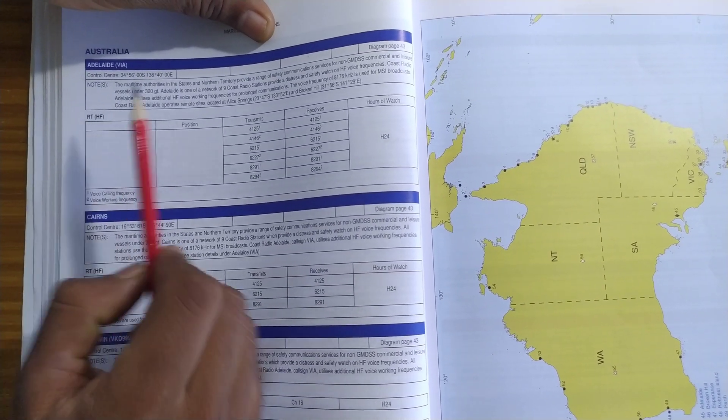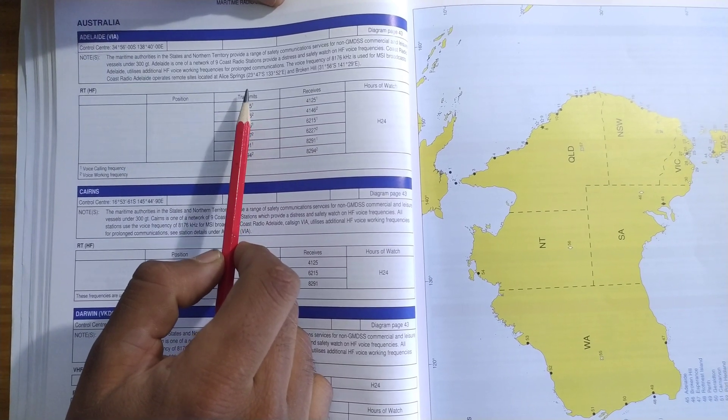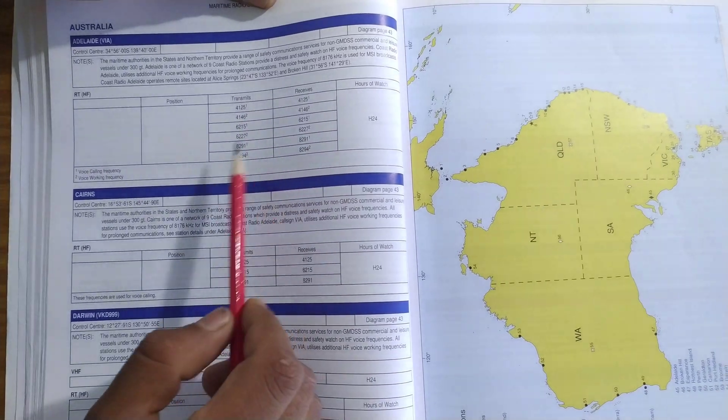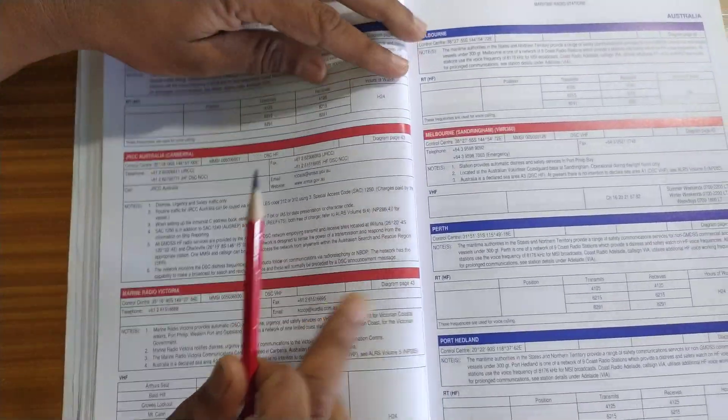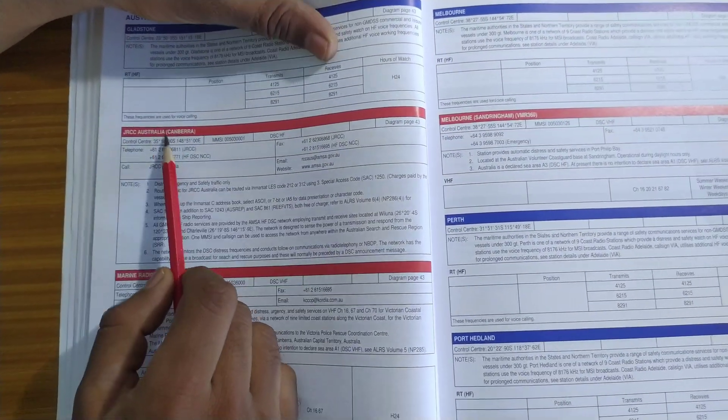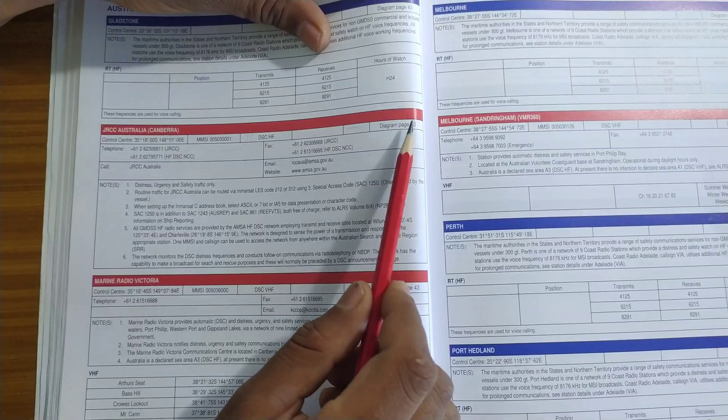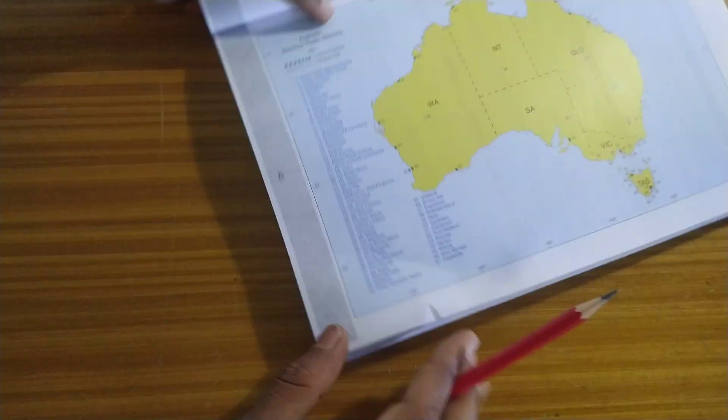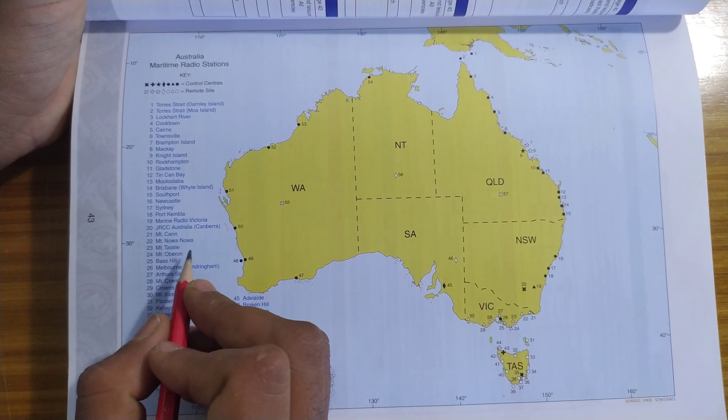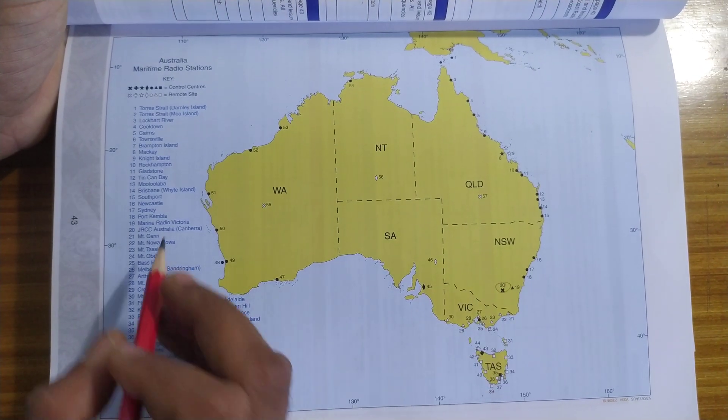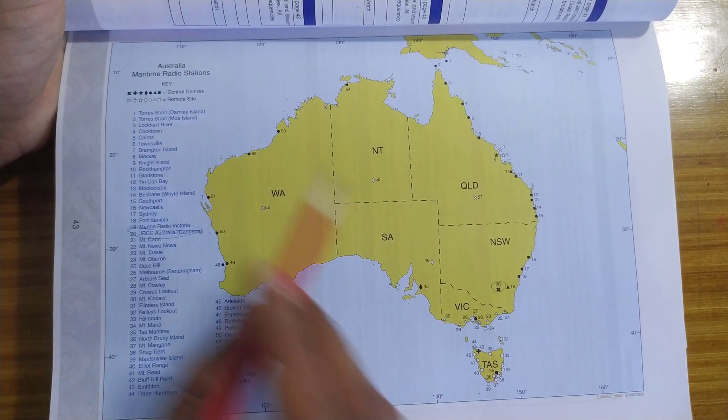Nothing else comes up here, so we will use JRCC Canberra. JRCC Canberra is an MRCC, so here is the control center, MMSI number, where this watch is going to happen. No AMBER, no weather observation, and diagram on page number 43. So this is page number 43. On page number 43 you can find Canberra. Should be somewhere here. So this is Canberra. As you can see, Canberra is a control center so it is in black. If it was a remote site they would have given it in white.